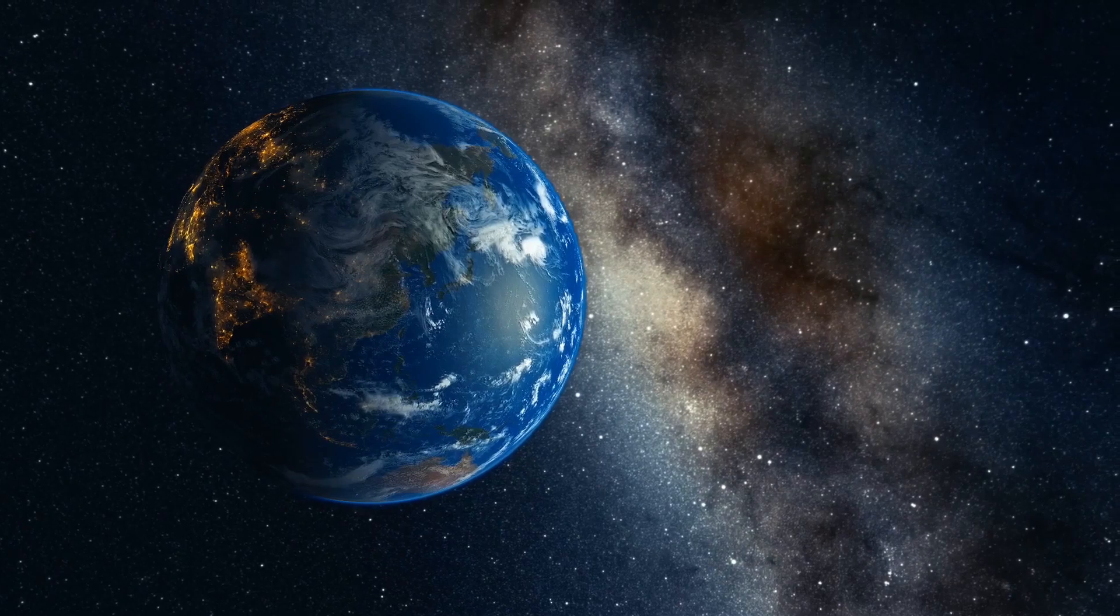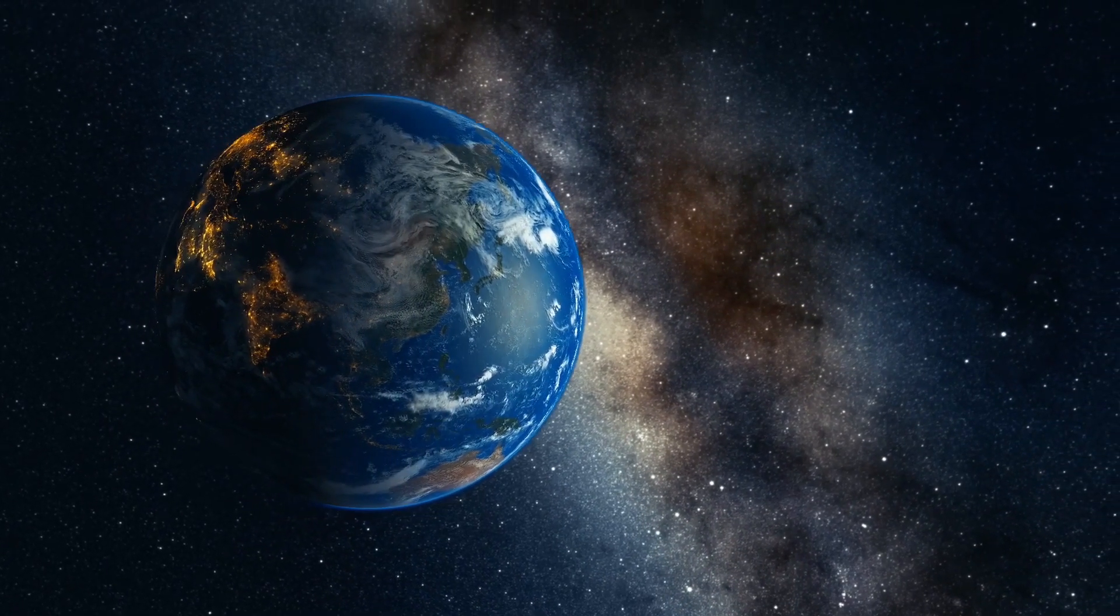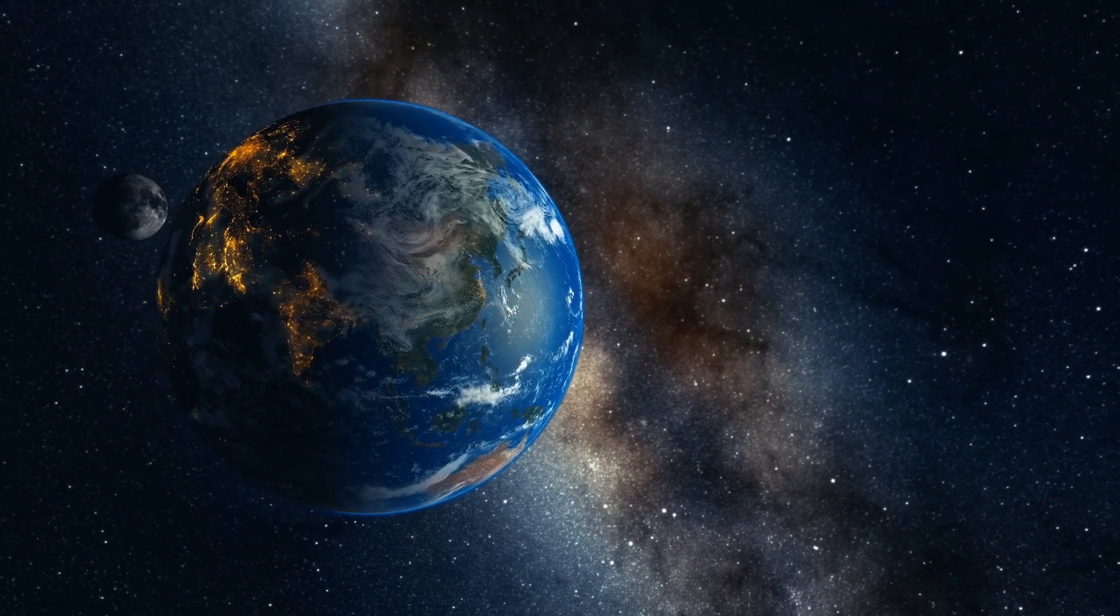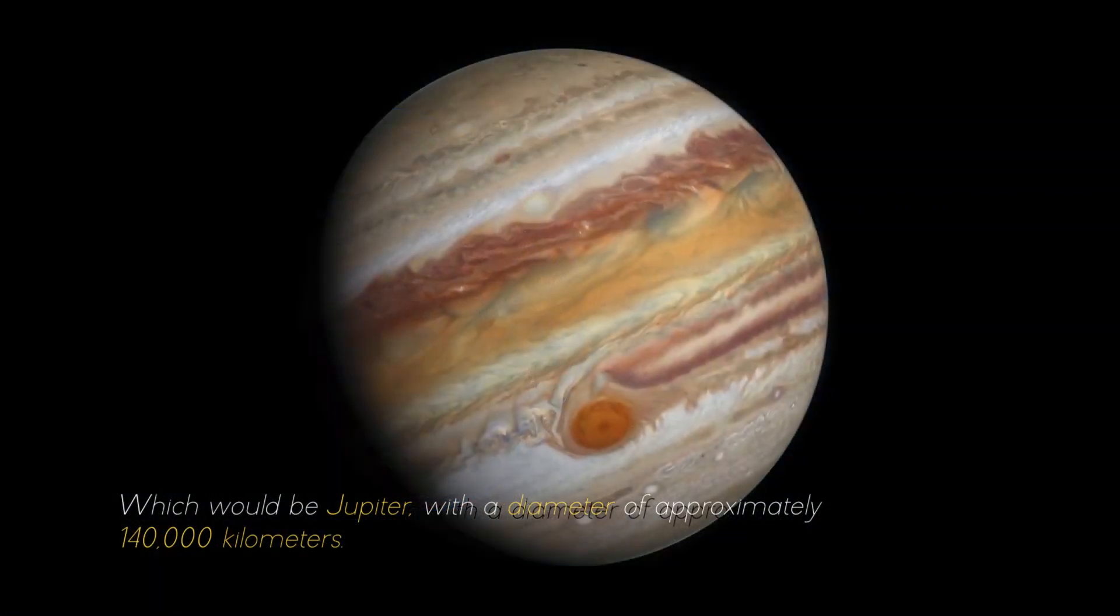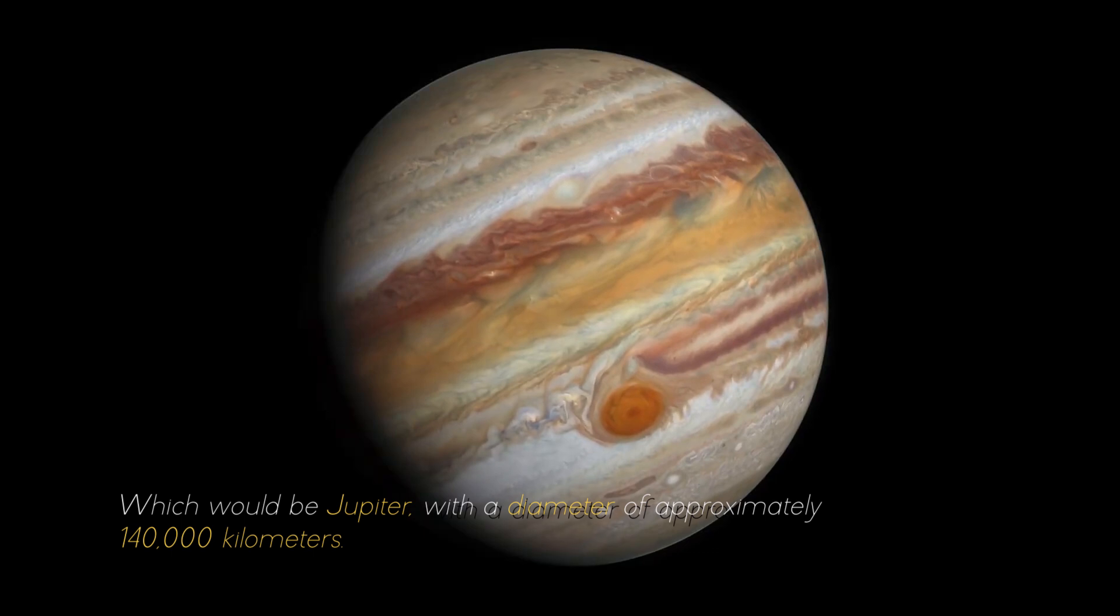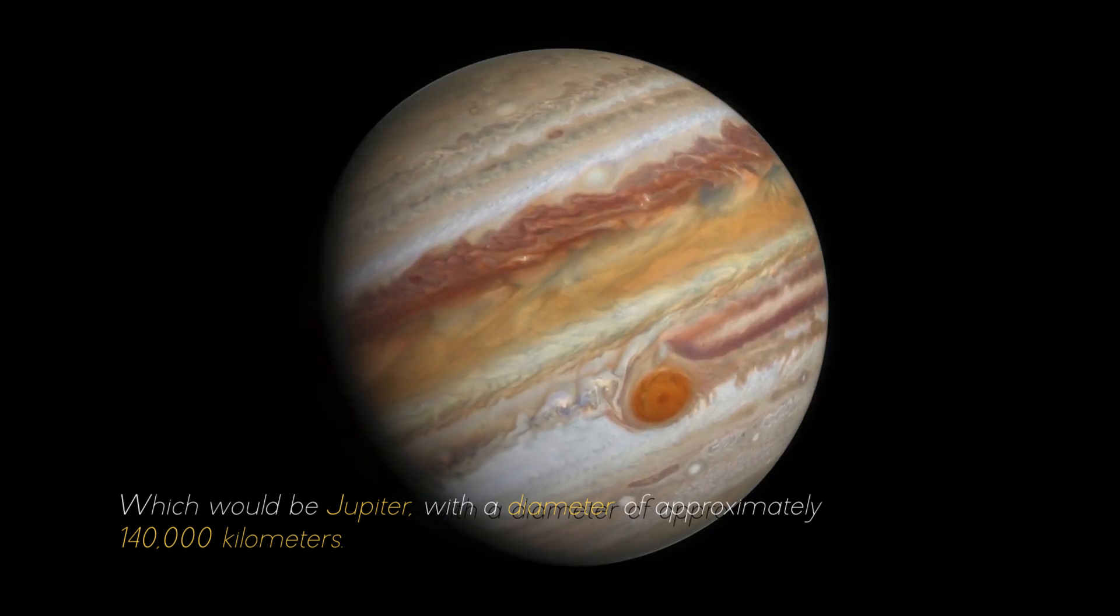If we compare it with the largest planet in our solar system, it would look like a ping-pong ball in front of a soccer ball, which would be Jupiter, with a diameter of approximately 400,000 kilometers.